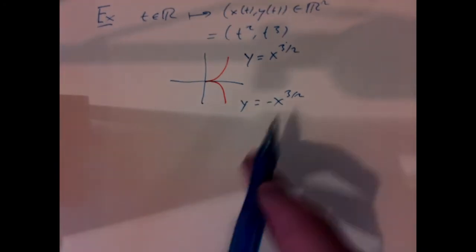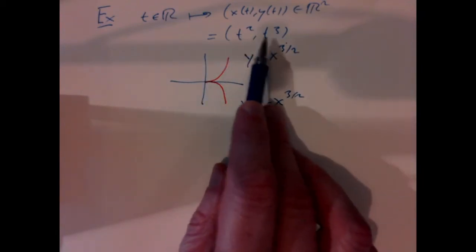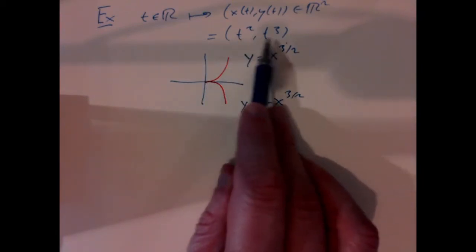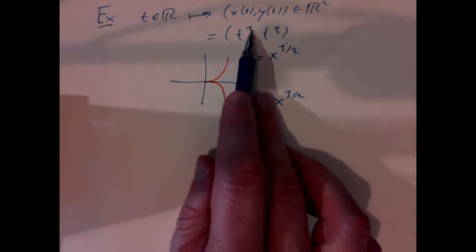That leads us to the first condition we'd want to have. Why is this messing up? The derivative of this map is vanishing — it has a critical point — exactly when t equals 0. Because when t equals 0, the derivative of t squared is 0 and also the derivative of t cubed is 0. The rank of the map is dropping because the derivative is going to 0.